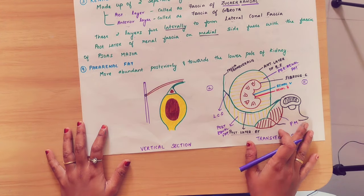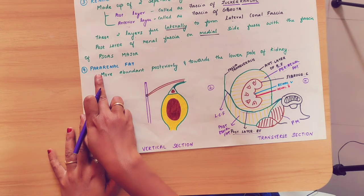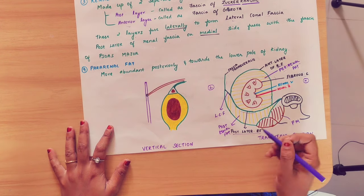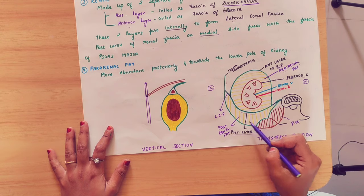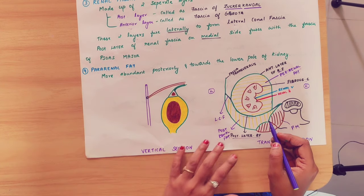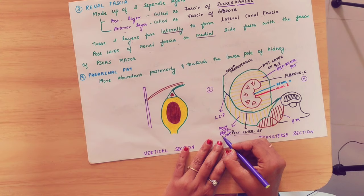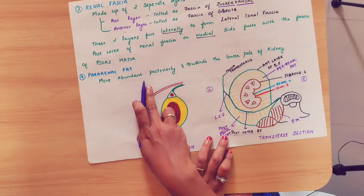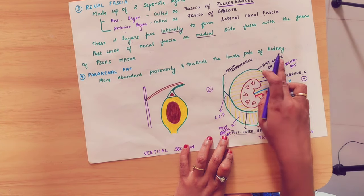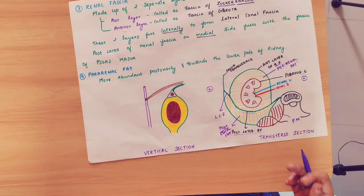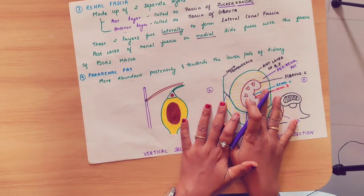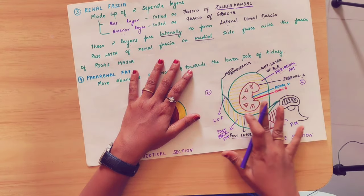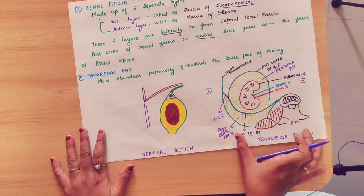Coming to the last layer, that is the pararenal fat. Pararenal fat is outside the renal fascia. It is more abundant posteriorly and towards the lower pole of the kidney — the fat is more at the lower pole compared to the upper pole.